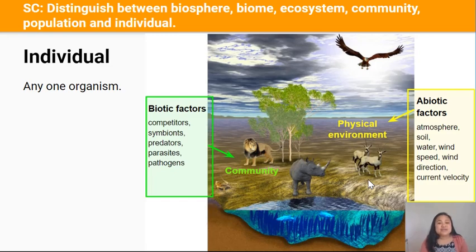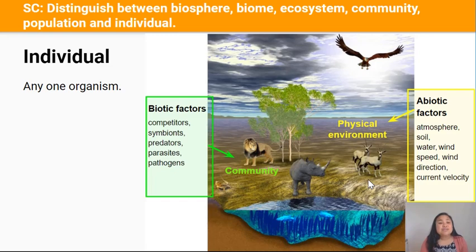In this ecosystem there's also a community of different populations of living organisms. There's a population of lions, rhinos, gazelles, eagles, fish, and don't forget the plant populations like the tree and seaweed that make up the community of organisms. These factors are biotic because they're alive. These individuals interact with one another and these interactions are called biotic factors because these organisms are either competitors, predators, or they may work together, and so on.